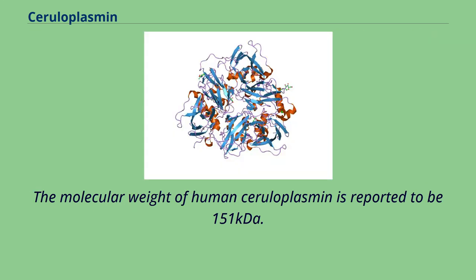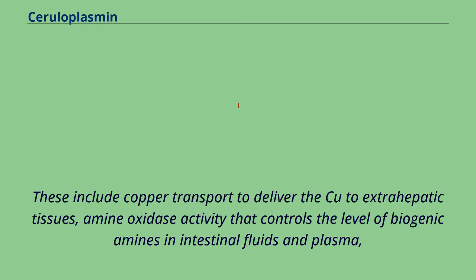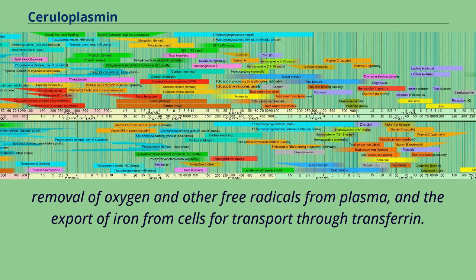The molecular weight of human ceruloplasmin is reported to be 151 kDa. Despite extensive research, much is still unknown about the exact functions of CP. Most attributed functions focus on the presence of the copper centers. These include copper transport to deliver copper to extra-hepatic tissues, amine oxidase activity that controls the level of biogenic amines in intestinal fluids and plasma, removal of oxygen and other free radicals from plasma, and the export of iron from cells for transport through transferrin.